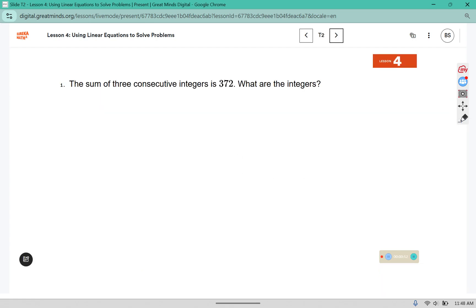The sum of three consecutive integers is 372. What are the integers? Consecutive means that they come one after the next, so like five, six, or seven. But if we add those up, that does not equal 372. So we have to figure out what those values are.